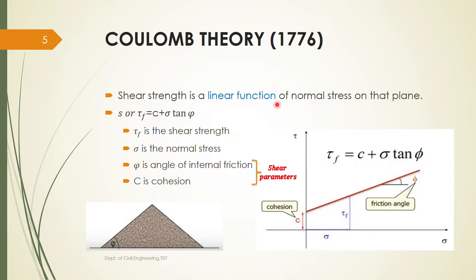For defining shear strength we have different theories. In Module 4 we will study the Mohr-Coulomb failure theory, which is a combination of Coulomb theory and Mohr theory. First we'll study Coulomb theory, then Mohr theory, and then combine them to form Mohr-Coulomb theory. According to Coulomb theory, the relationship between normal stress and shear stress is a linear function — the shear strength is a linear function of normal stress on the plane.